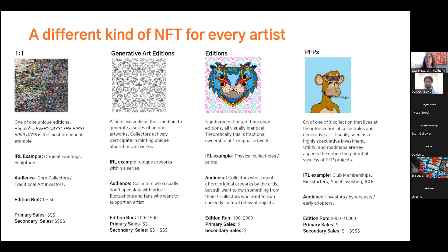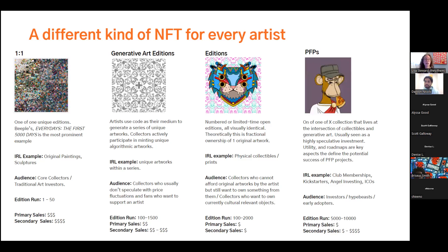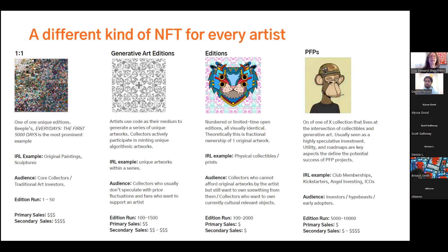PFPs can be club memberships, Kickstarters, angel investing as your IRL correlation — things that don't necessarily have art tied to them, but there's a visual representation there. Your hypebeast collectors, investors, and early adopters are going to be interested in this style of work. Edition runs are quite large; primary sales tend to start very low. Most of the NFTs I own are considered PFP-style — one of 5,000 or one of 10,000 — that I was minting for 0.07 ETH, which at the time of minting was about $300. On secondary sales, this is where you can really see your collection gain value as an investor and collector. What the artist gets out of that is all dependent on what's in that smart contract — what does the artist get as a percentage on secondary market sales?